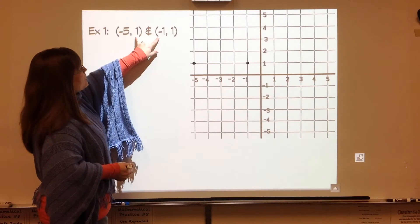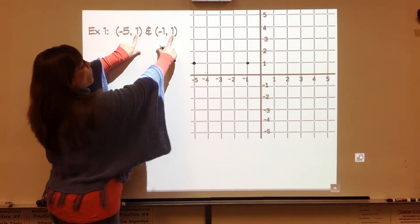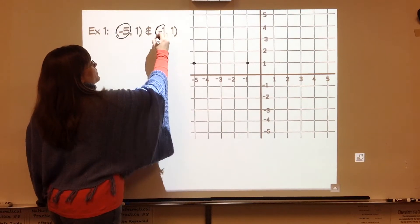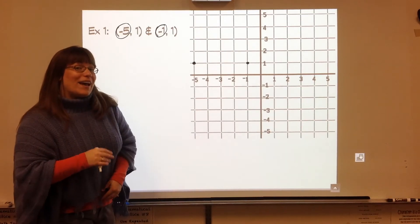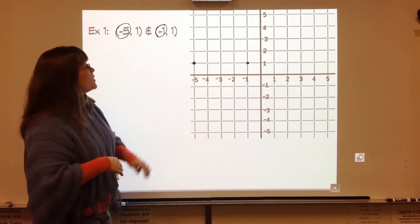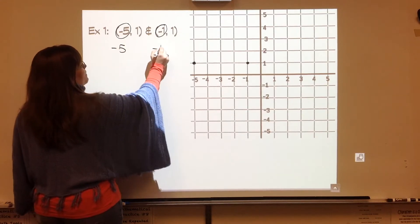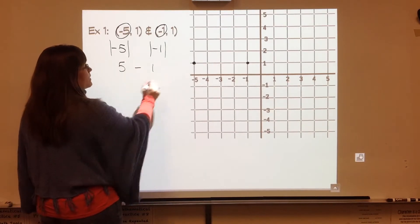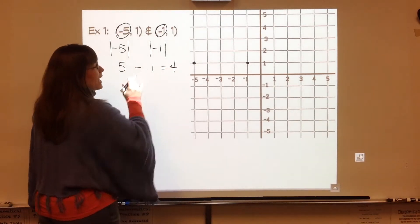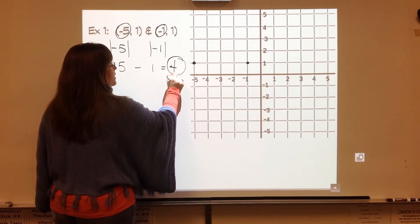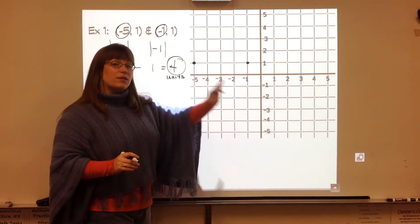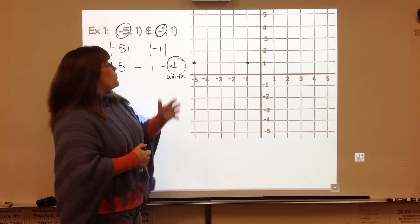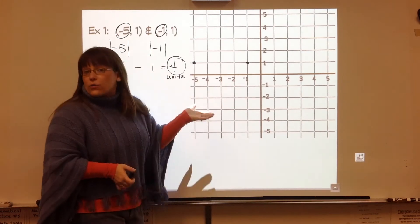If we look at these two points, they have the same y value of one. So I'm going to pay attention to the two numbers that are different. Those x coordinates is negative five and negative one. If I take the absolute value of each of those numbers, I get five and one. And if I subtract them, I get my answer of four units. So I don't just have to count. This is another way to double check. Hey, did I do it right? And this would be something that you could do without a coordinate grid as well.